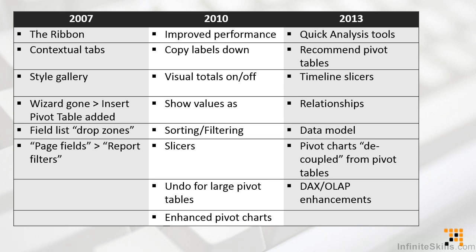We introduced slicers in 2010, but in 2013 we're able to use slicers in a timeline fashion. In 2013, there were also some significant changes made in the way that data was handled — the entire data model itself had been completely revised over the older versions. This allowed for things like creating relationships between different data sets, so we can now create pivot tables from two or more sets of data, not just one. We also got the ability to decouple pivot charts — they can now be completely separate from pivot tables themselves.